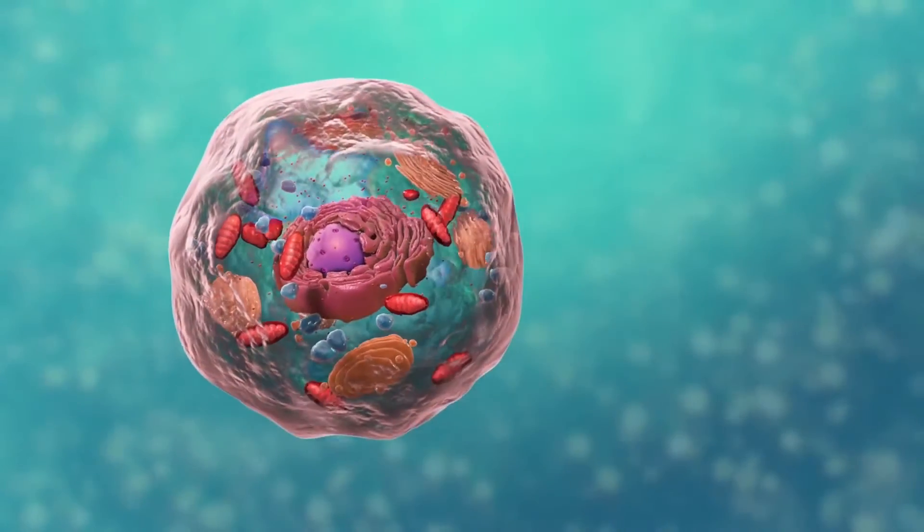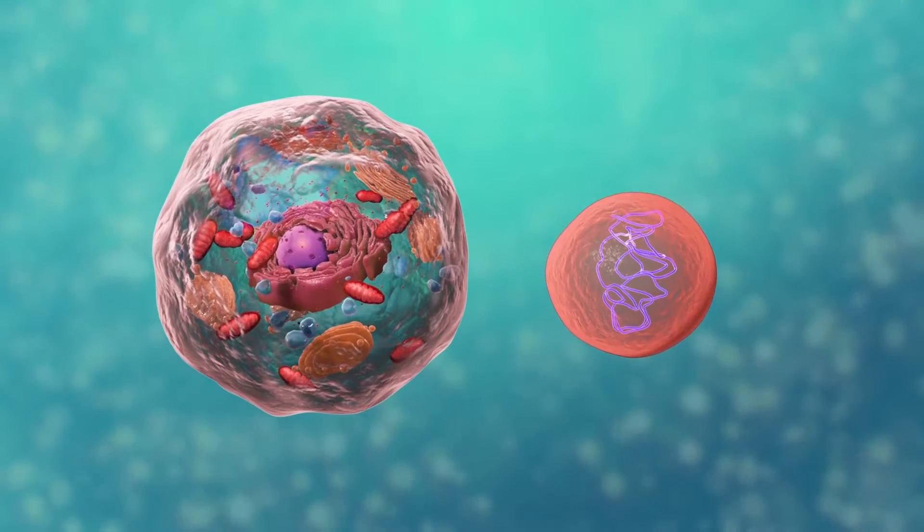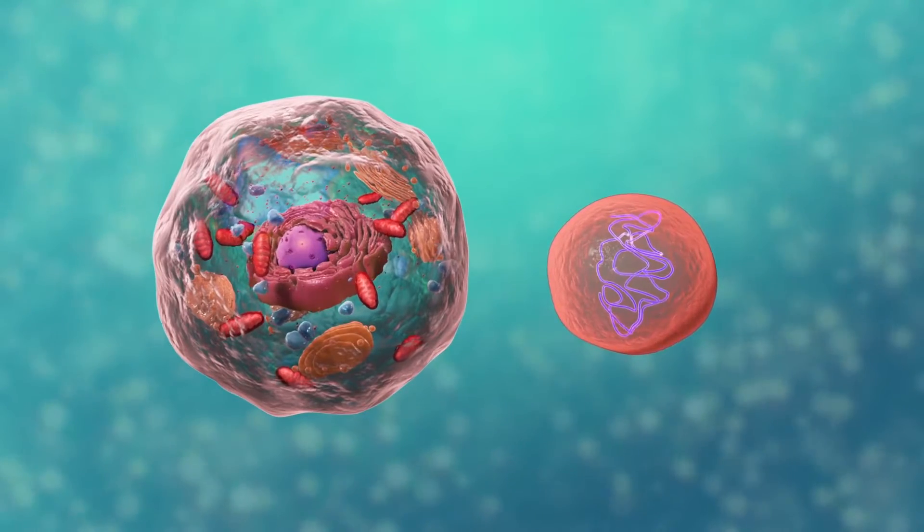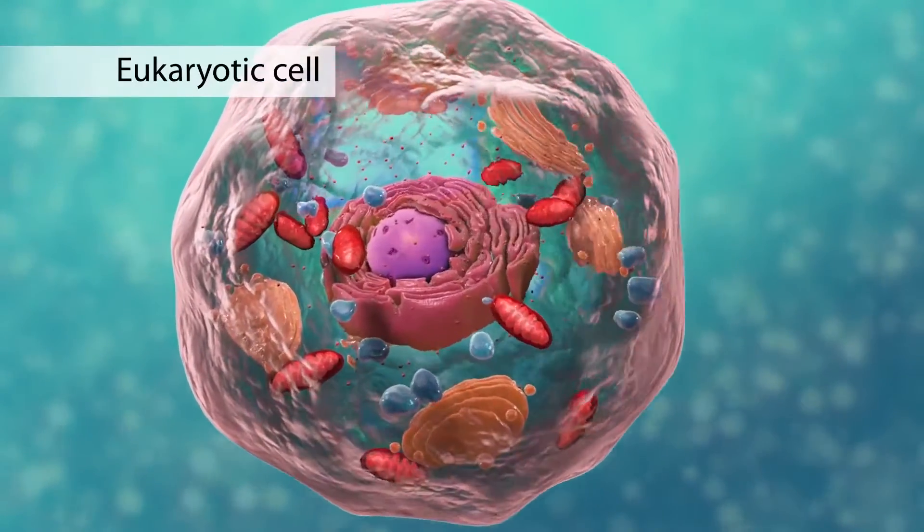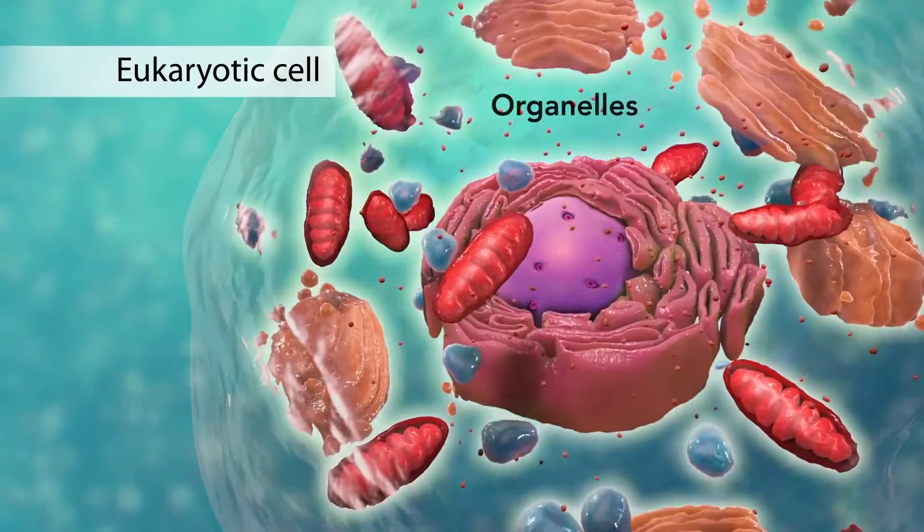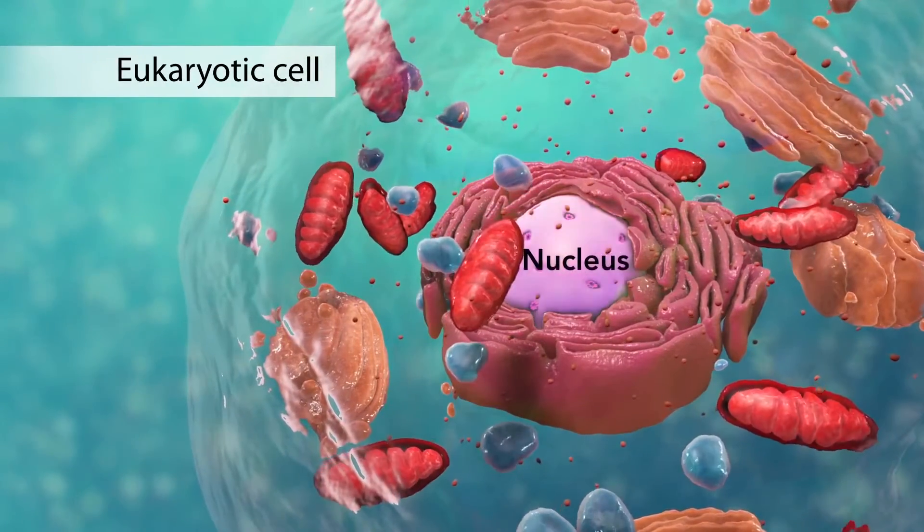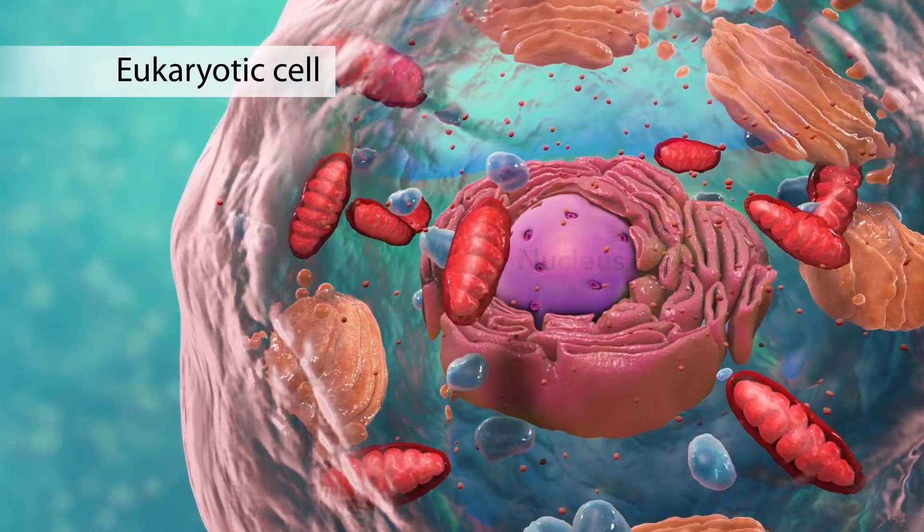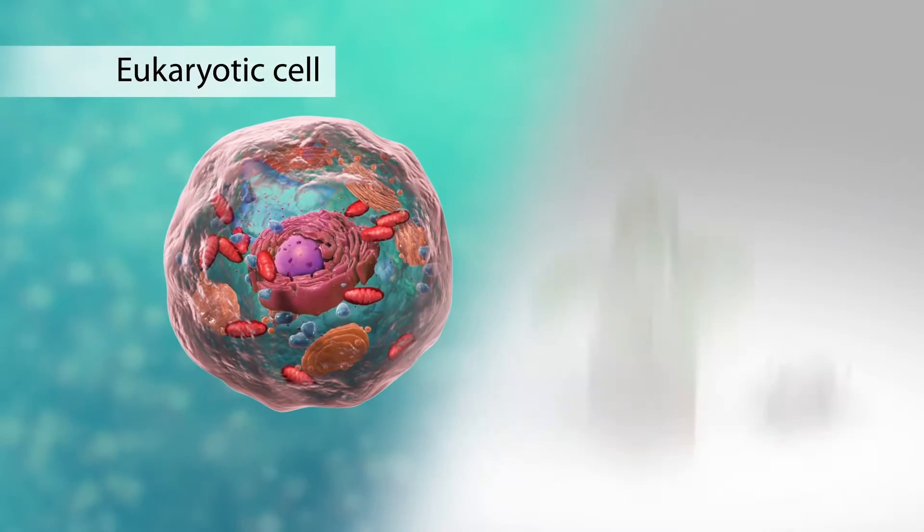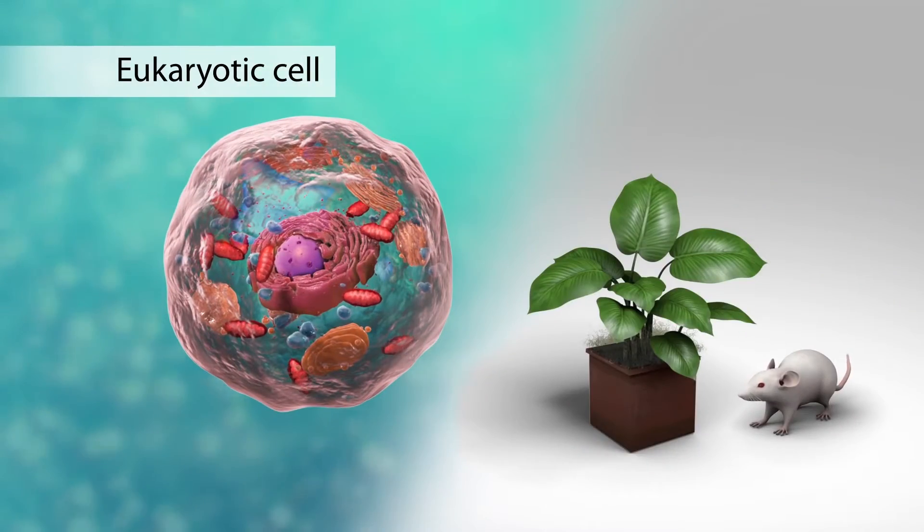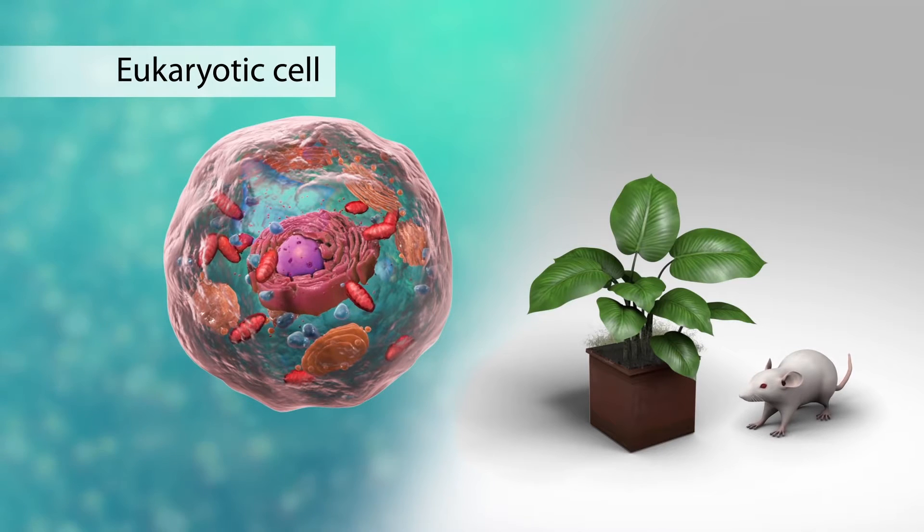There are two broad categories of cells. The first category is eukaryotic cells. They have organelles which include the nucleus and other special parts. Eukaryotic cells are more advanced complex cells such as those found in plants and animals.